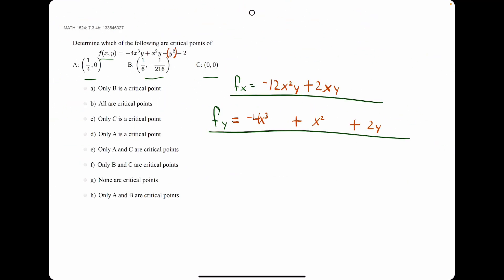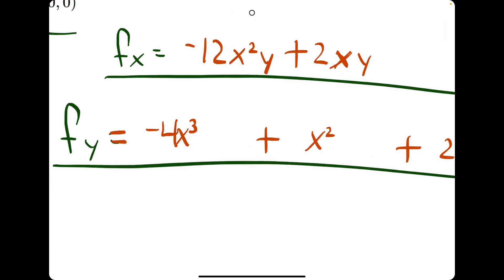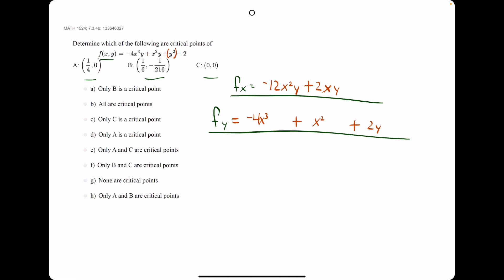So, now we have fx and fy. What I'm going to do for the remainder is go ahead and plug these x and y values in to all of these partial derivatives and get the values for every single one. And our goal, keep in mind, is looking for which ordered pairs make both fx and fy equal to zero.